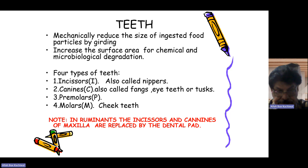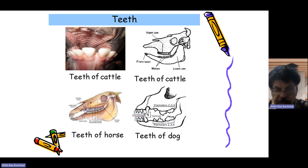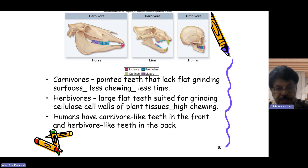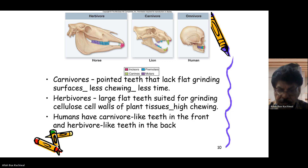In ruminants, the incisors and canines of the maxilla are replaced by the dental pad. The teeth of cattle have incisors in the lower jaw but a dental pad in the upper jaw with no teeth. Dogs possess a full mouth with all types of teeth, as do horses. Carnivores have teeth suited for less grinding, whereas herbivores have many teeth associated with grinding the cell walls of plant tissues.